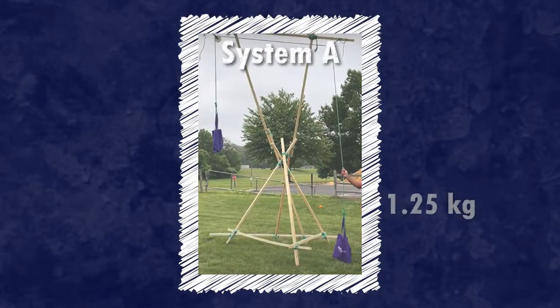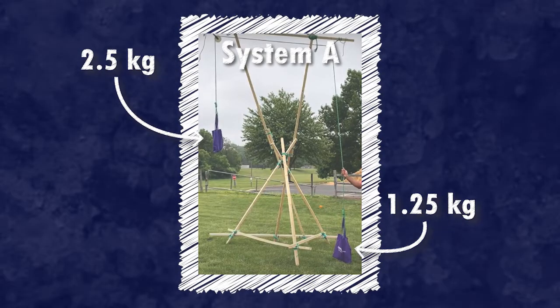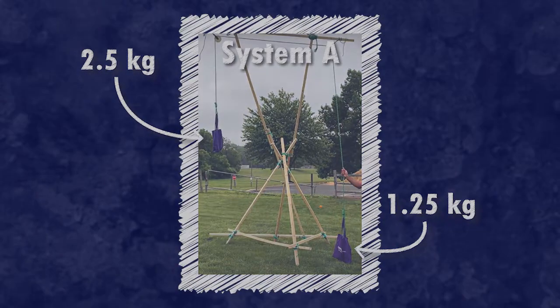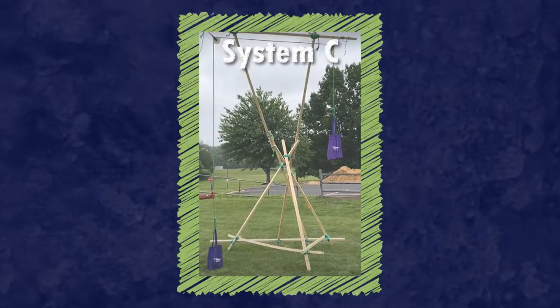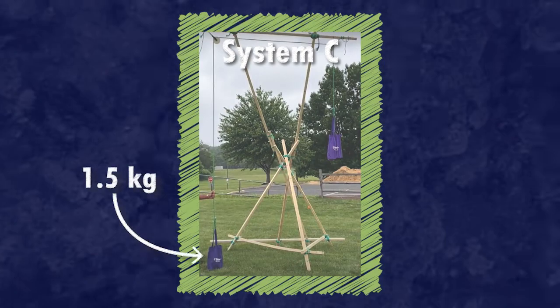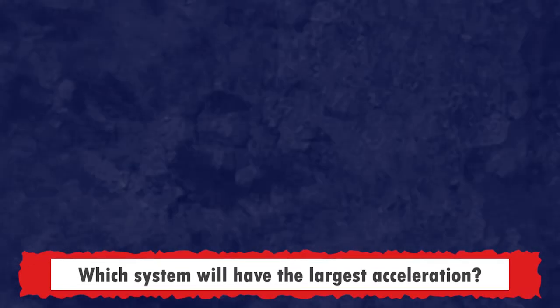Pictured in front of you is the Atwood machine we built with 3 different systems of masses. System A is 1.25 kg and 2.5 kg, System B is 2.5 kg and 3 kg, and System C is 1.5 kg and 2 kg. So the question, which system of masses will generate the greatest acceleration?